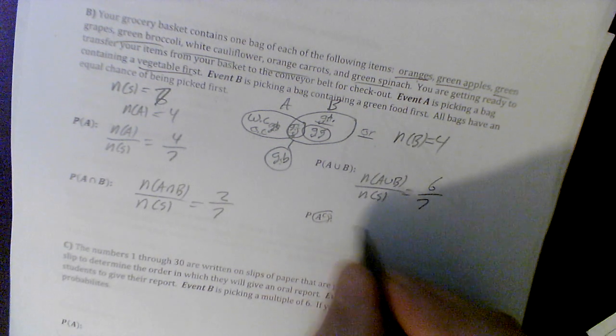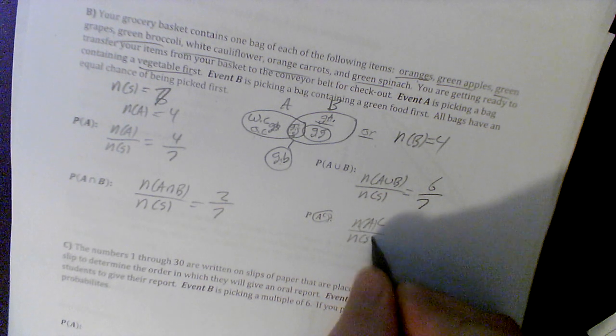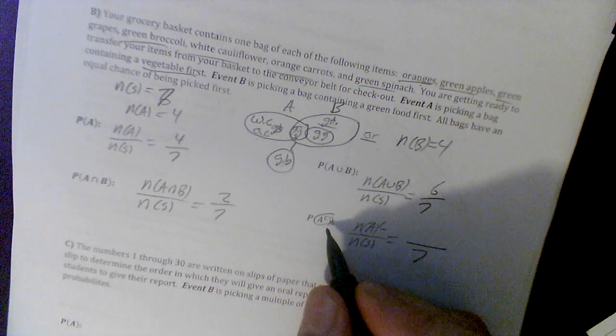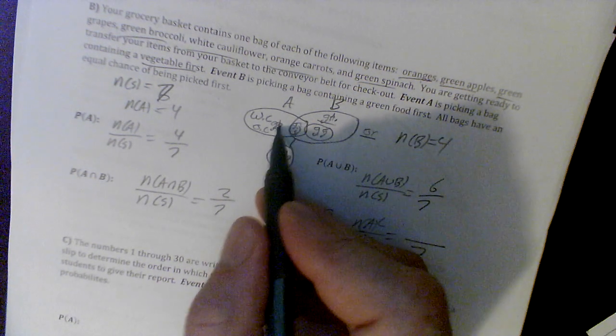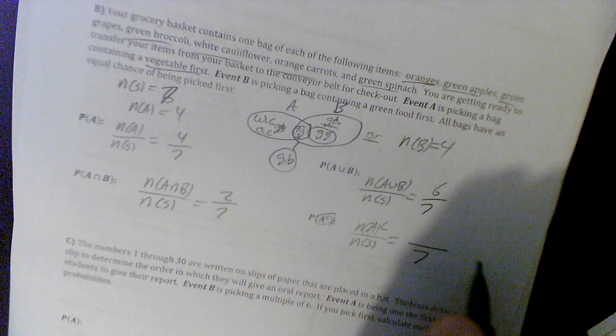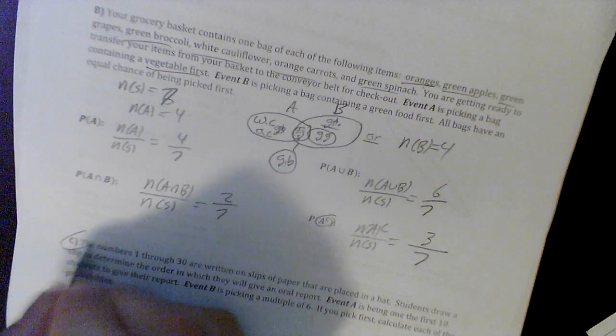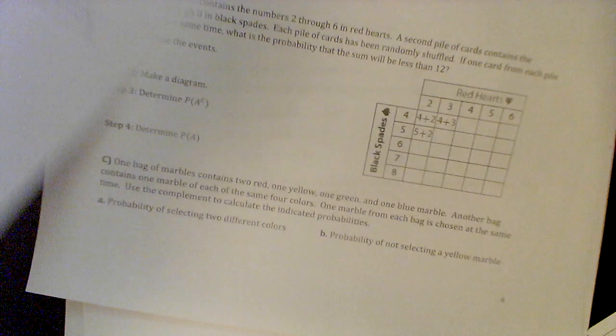And A's complement, this would be the number in A's complement over the number in the sample space. The number in the sample space is 7. A's complement would be everything outside of here, so we got 1, 2... there's 3. 3 sevenths. And that's it. I'm going to let you try C. This may be the only thing you show me when you come back. But we're going to move on. We'll come back with page 4. One more page to go.